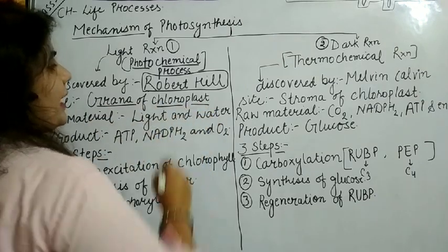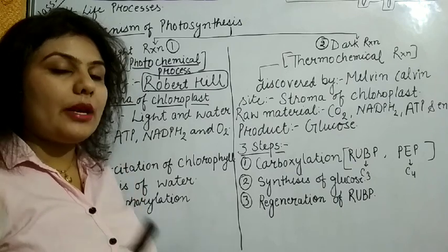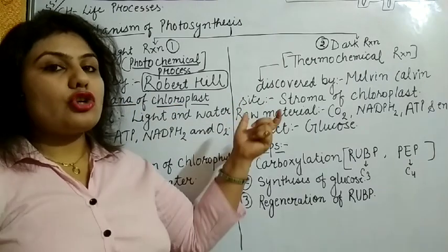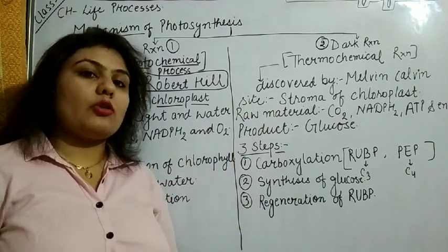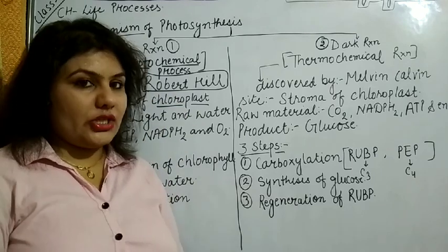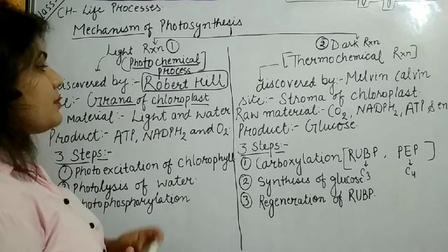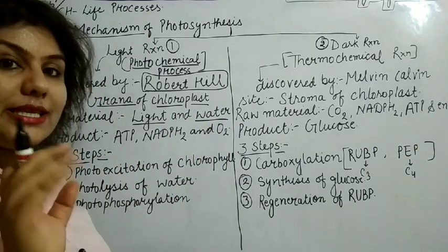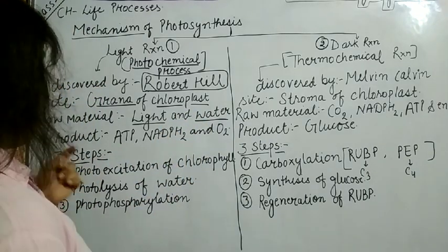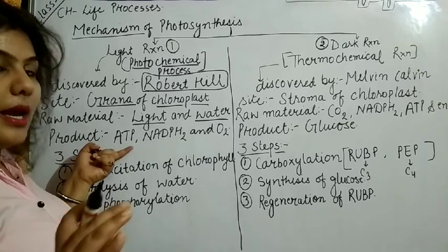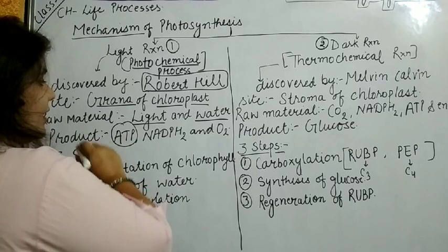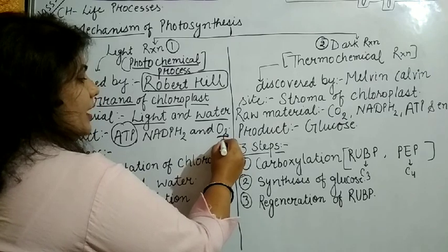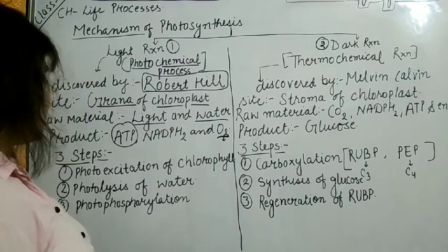As I explained in Class 9, chloroplast as a cell organelle is made up of two things: grana and stroma. You can watch my video from the description link to study chlorophyll in detail. In this process, the raw materials used are light — meaning sunlight — and water (H2O). The products that come out are ATP, NADPH2, and oxygen — the oxygen that plants release through the process of photosynthesis.